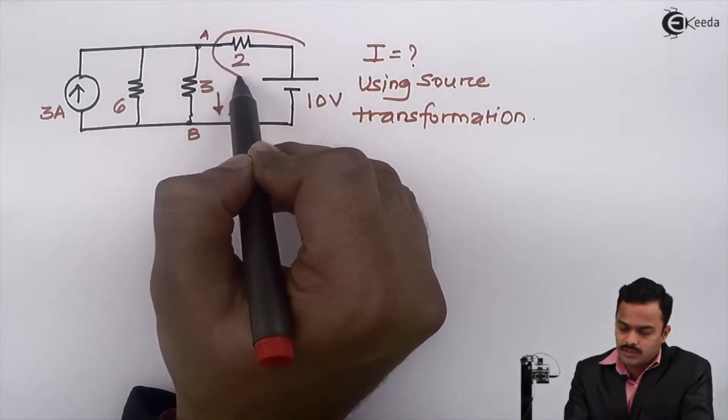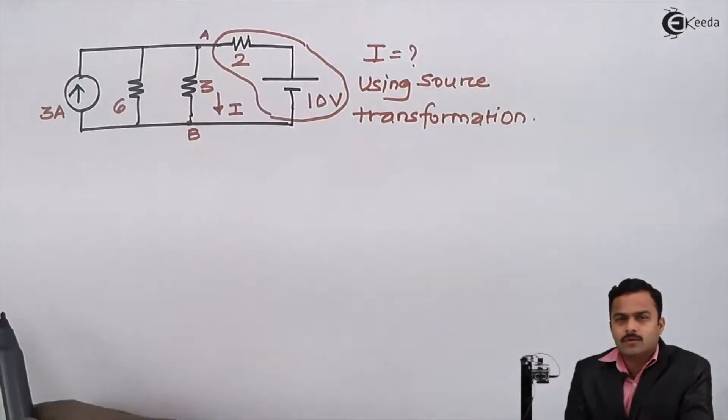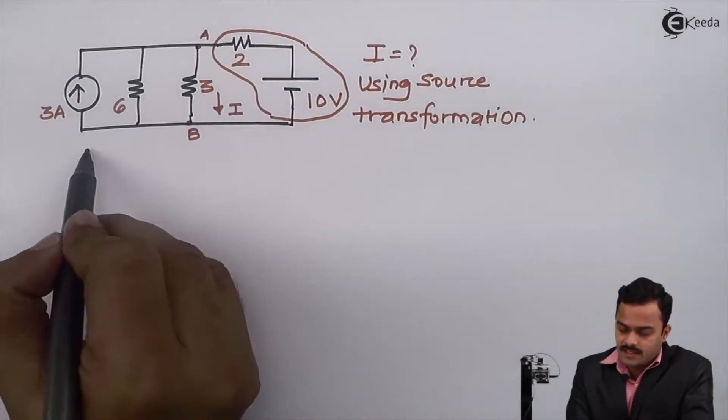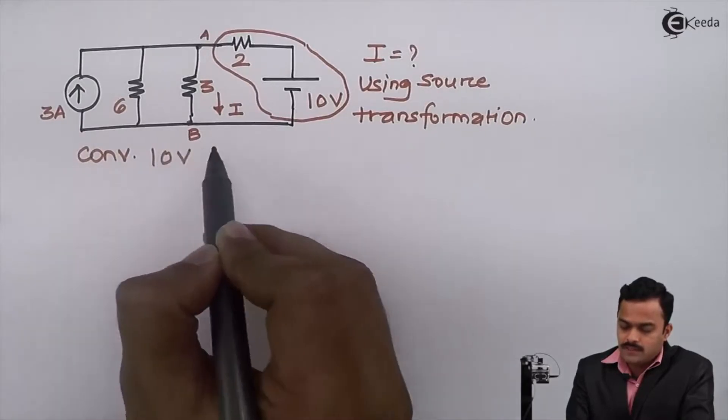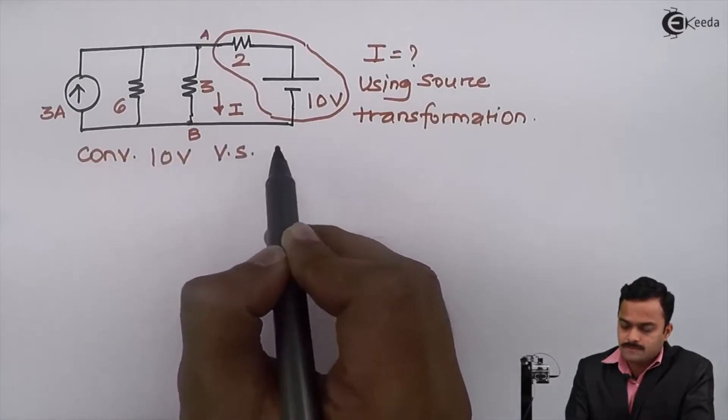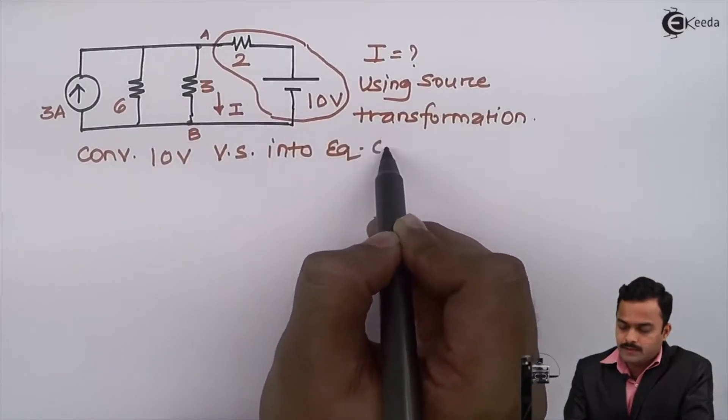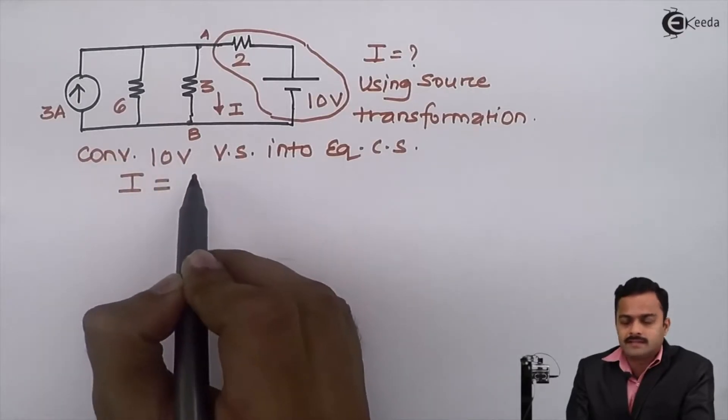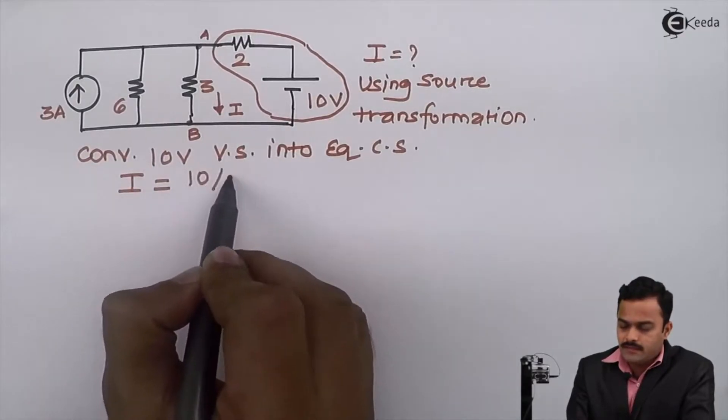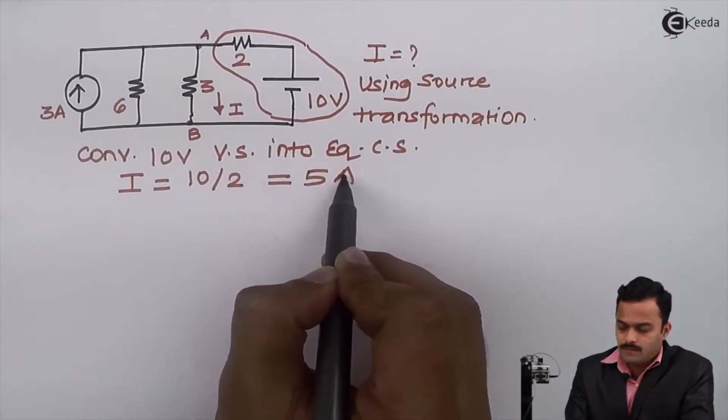If I transform this voltage source into equivalent current source, see what will happen. So first I'll write: converting 10 volt voltage source into equivalent current source. The current value will be voltage divided by resistance, so it is 5 ampere. I'll redraw the circuit.